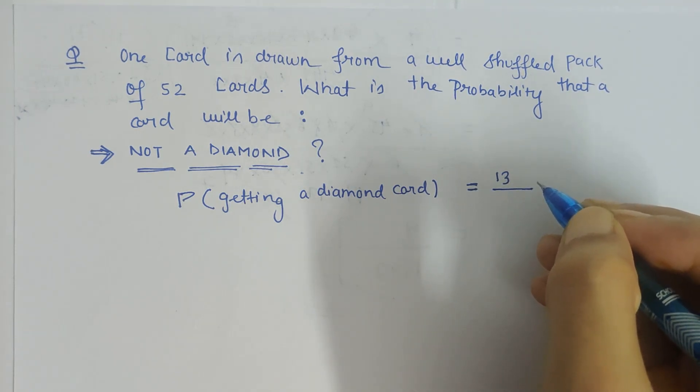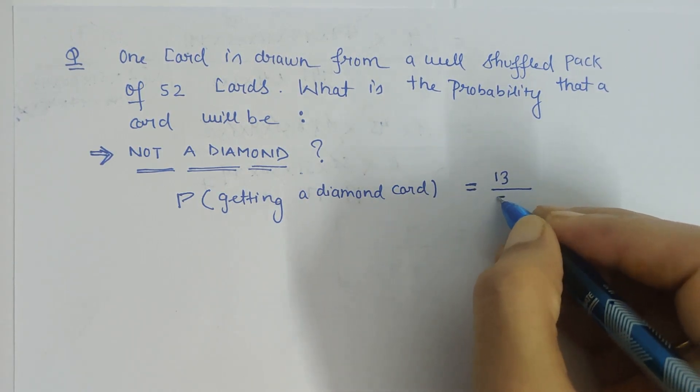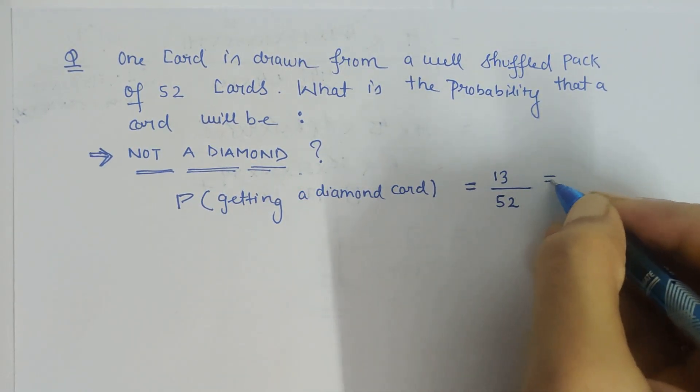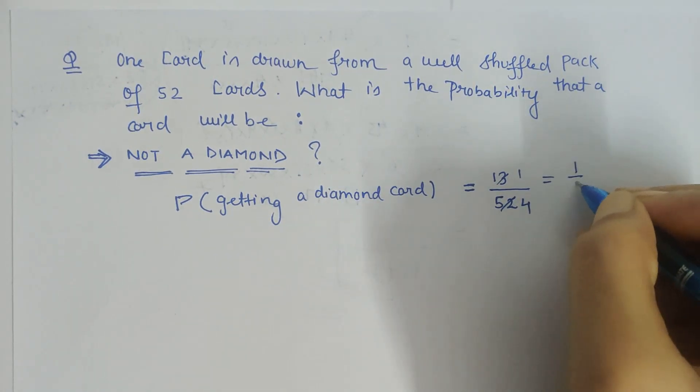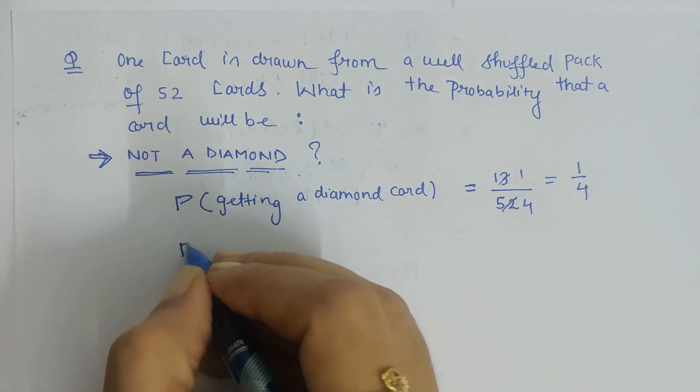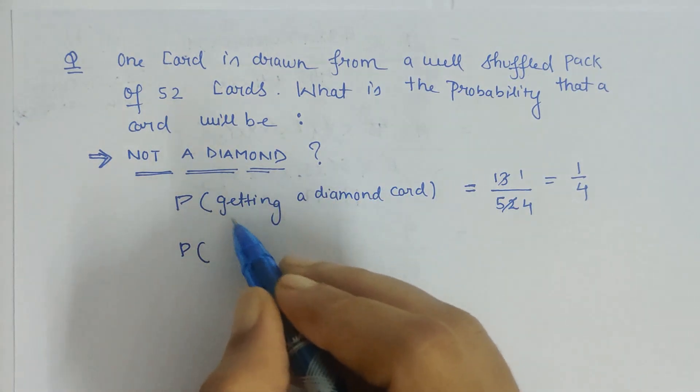So 13 out of 52 equals 1/4. Now that we are asked to find the negation of this, that the card drawn is not a diamond, we just have to subtract the obtained probability from 1.